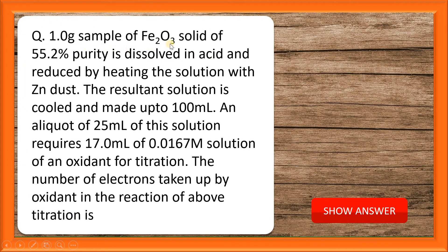One gram sample of Fe2O3 solid of 55.2% purity is dissolved in acid and it is reduced by heating the solution with zinc dust. The sample mass is one gram and purity is 55.2%. Fe is in oxidation state +3, and in the presence of zinc solution it gets reduced to +2. The resultant solution is cooled and made up to 100 ml.